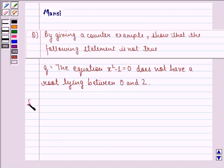So let us see the solution to this one. This is the statement given to us. Now, x² - 1 = 0 implies that x² equals 1, and this implies that x is equal to plus minus 1.